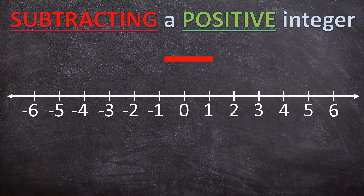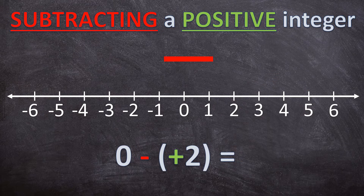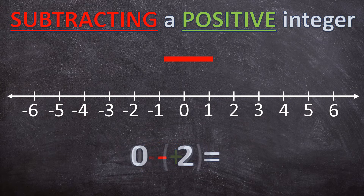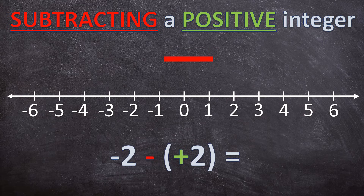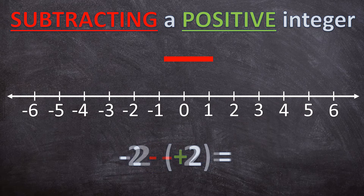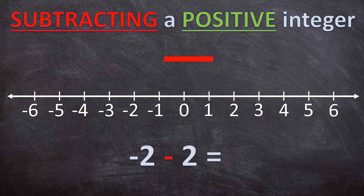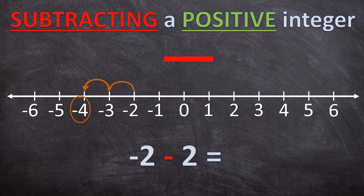Let's look at another example: 0 minus positive 2 can simply be written as 0 minus 2. Let's have a look on the number line — 0 minus 2 is negative 2. And the last example: negative 2 minus positive 2 can be written as negative 2 minus 2, which is negative 4.